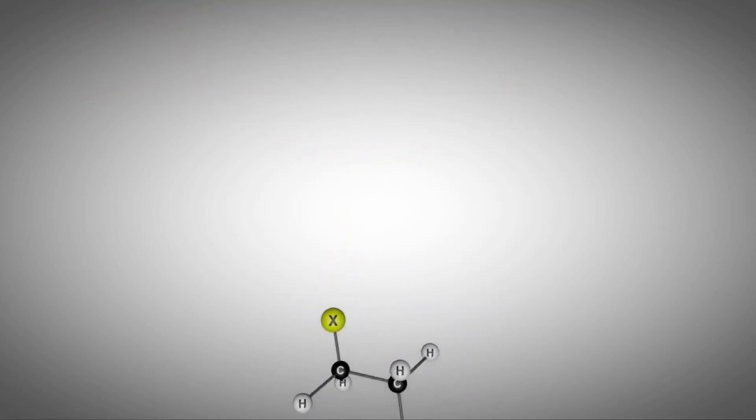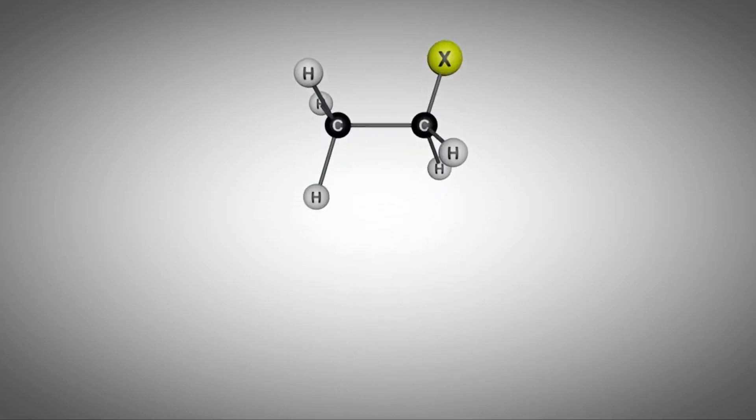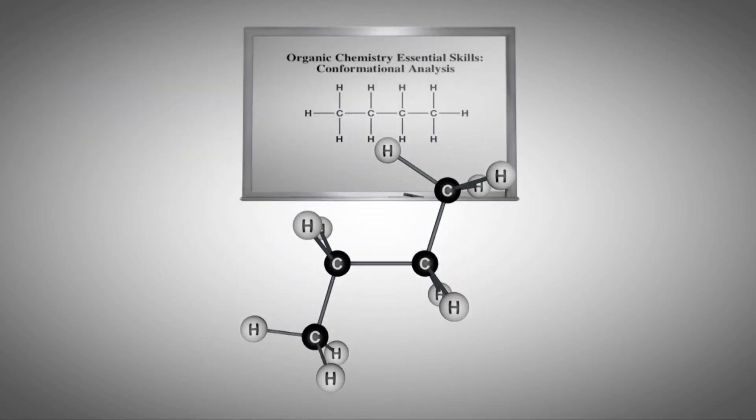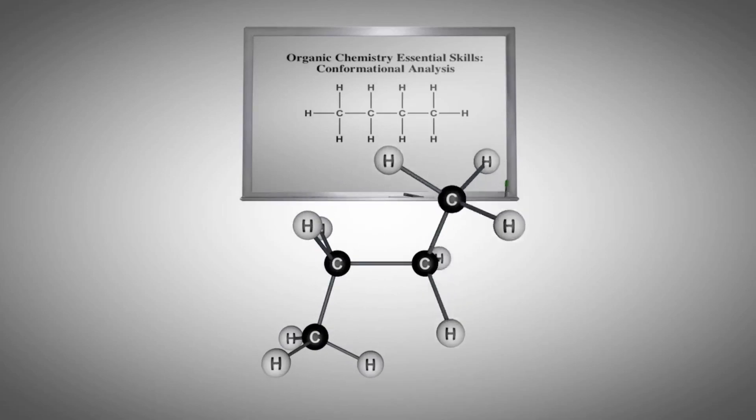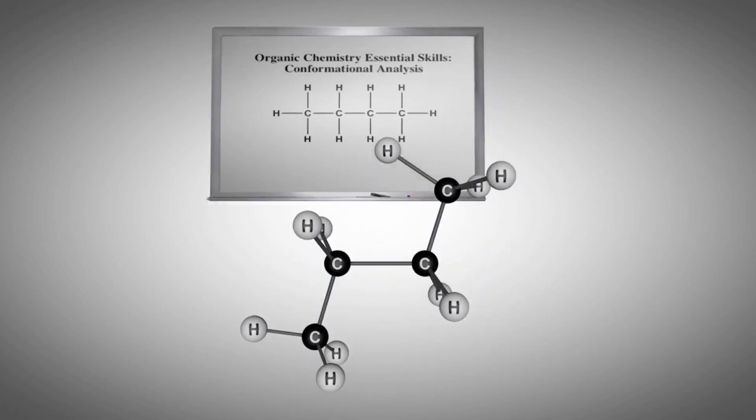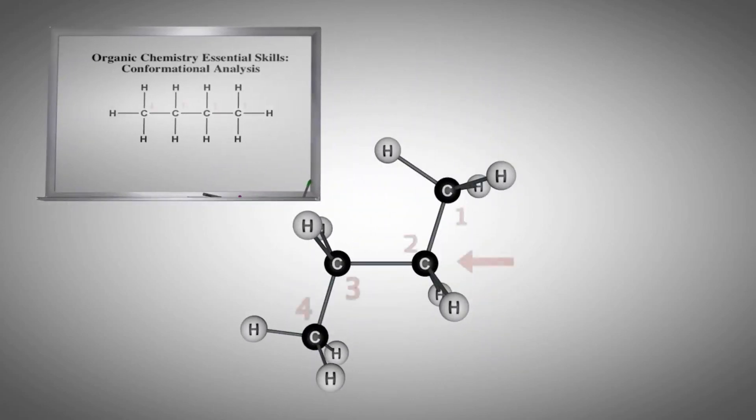In the next example, we will replace two of the hydrogen atoms with methyl groups to afford N-butane. As with the previous example, free rotation about all the carbon-carbon sigma bonds can occur. In fact, they are all happening simultaneously.